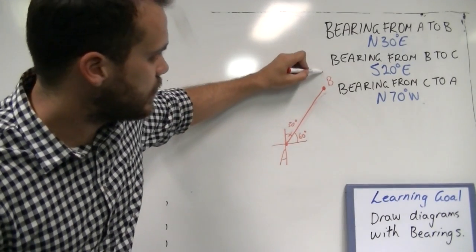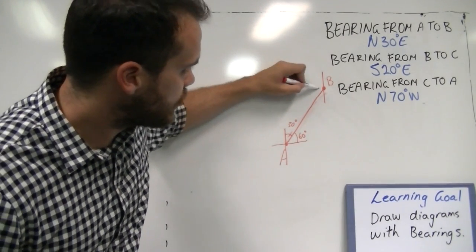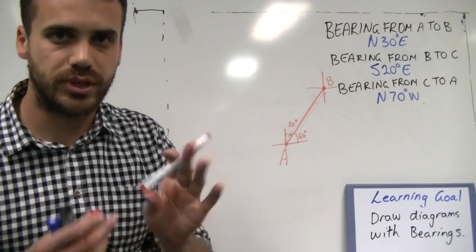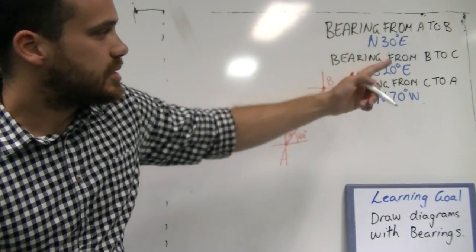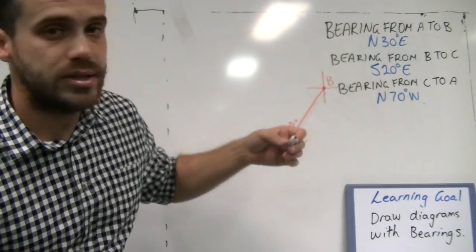From point B, again, at each person, make sure you draw a compass rose. That makes it really easy to see where all the angles are. From B to C, you go south 20 degrees east.